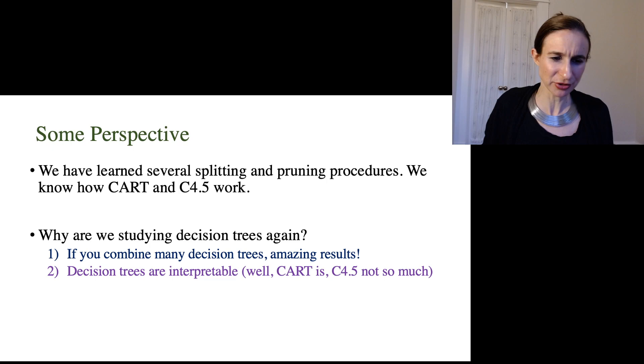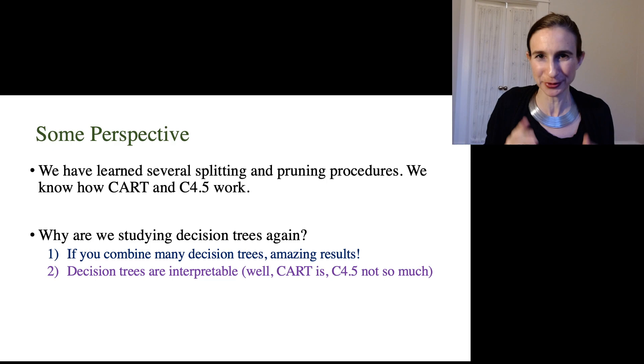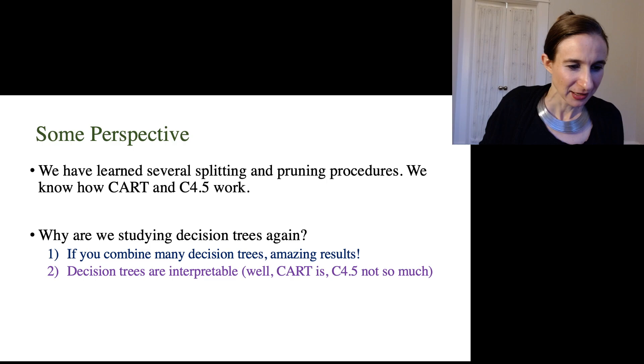And then also decision trees are interpretable, well, I should say CART is, and C4.5, not so much. You have to do a lot of pruning on C4.5, because it tends to produce uninterpretable trees. But greedy, though, it's not the only way to train an interpretable decision tree.